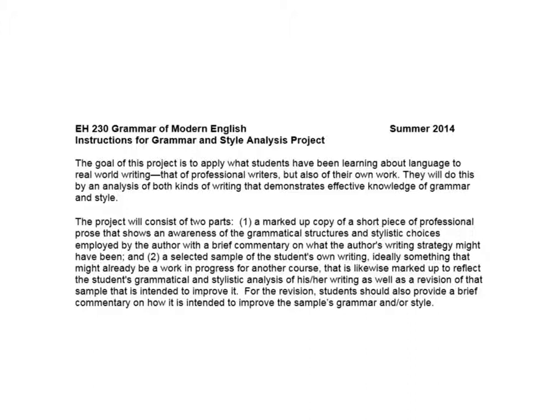The project consists of two parts. The first is a marked-up copy of a short piece of professional prose that shows your awareness of the grammatical structures and stylistic choices employed by the author, with maybe just a couple of comments on what the author's writing strategy might have been. Then you select a sample of your own writing — ideally something that might already be a work in progress for another course, or something you've been working on as a creative writer, for yourself or for a course, or a paper from last semester.